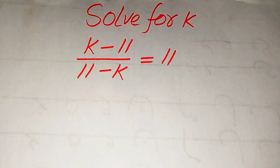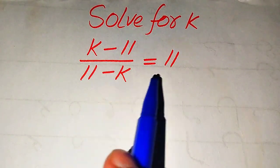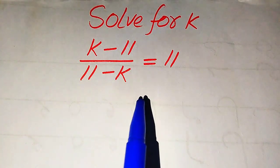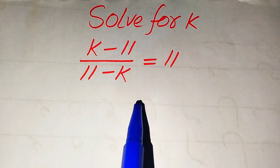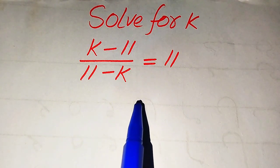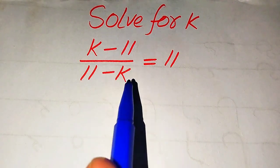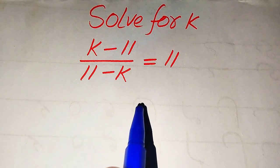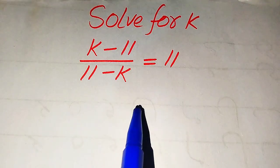Hello everyone. How to solve this problem: for the values of k, if we have (k minus 11) divided by (11 minus k) equals 11. We solve this problem for all the roots of this equation. We need to find all the roots and at the end verify which roots are solutions and which are extraneous. We will solve this problem using two methods.